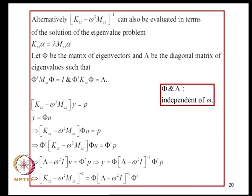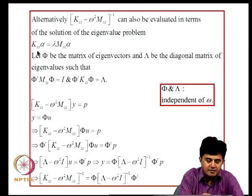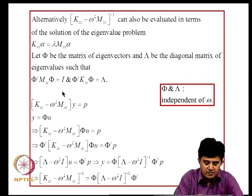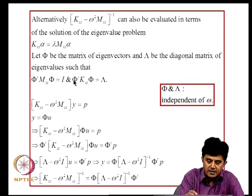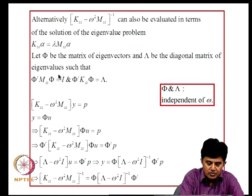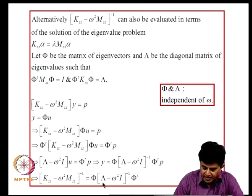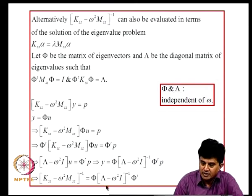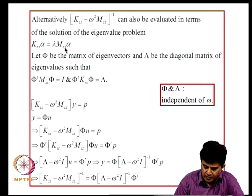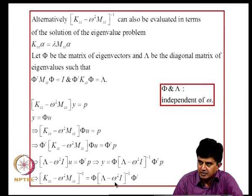Alternatively, we can formulate the eigenvalue problem K_SS α = λ M_SS α. If Φ is the matrix of eigenvectors and Λ the diagonal matrix of eigenvalues satisfying the orthogonality relations, then the inverse of D_SS can be expressed as a diagonal matrix that does not require inversion for each ω. Since Φ is computed once independent of ω, the same Φ can be reused for different driving frequencies, affording computational savings.